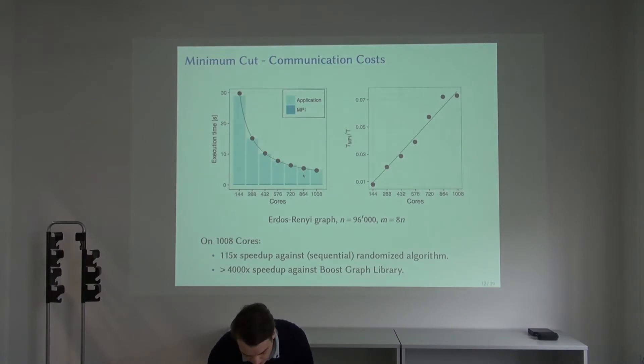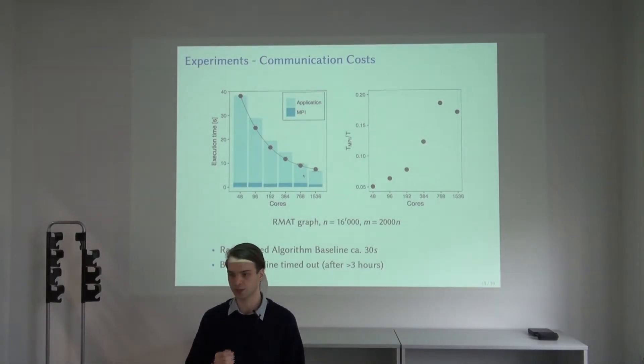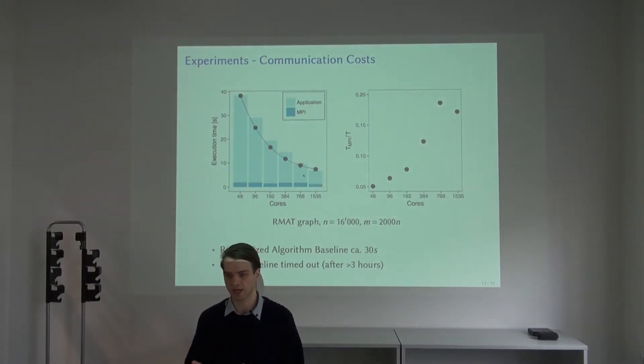On denser graphs we see that the communication volume increases and we spend around 20 percent of the time communicating. This stresses why it's important to reduce the communication because this really limits ultimately the scalability. The communication costs do not decrease if you have more processors. It only gets more complicated and expensive to synchronize, so keeping those low is really important.